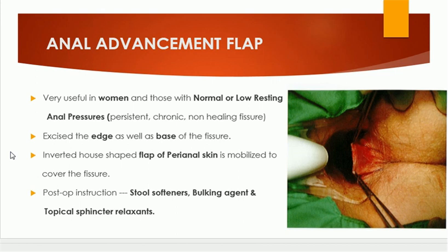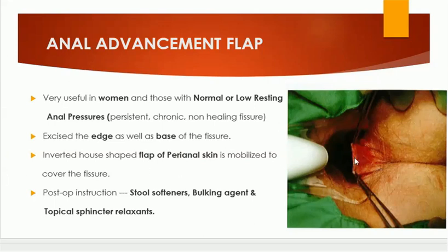Anal advancement flap is very useful in women and those with normal or low resting anal pressure — that means persistent chronic non-healing fissures. In this technique, the edges are excised as well as the base of the fissure. An inverted house-shaped flap of perianal skin is mobilized to cover the fissure. Here you can see the flap is raised and it is advanced inside.